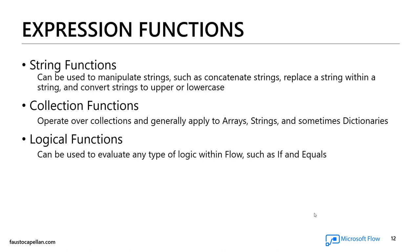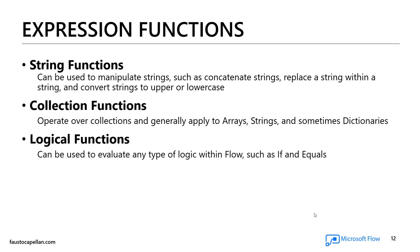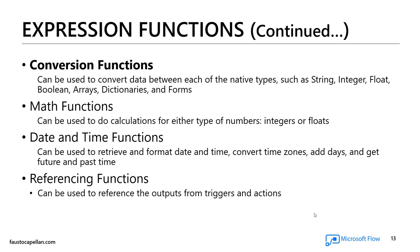Expression functions. Microsoft Flow contains a set of string functions that can be used to manipulate strings, such as concatenate strings, replace a string with another string, or convert a string to either upper or lowercase. It also contains collection functions, which operate over collections and generally apply to arrays, strings, and sometimes dictionaries. Another set are logical functions, which can evaluate any type of logic within Flows — such as if, equals, less than, greater than. It also has conversion functions, which can convert data types between each of the native types: string, integer, float, boolean, arrays, dictionaries, and forms.